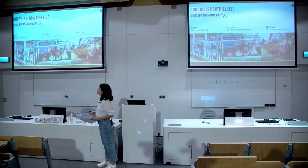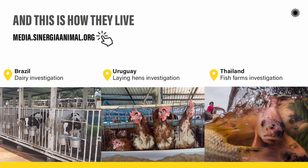This is how these animals live. Some of the worst practices for animals that have already been banned in Europe and in parts of the United States are still prevalent in Global South countries. For example, this is a dairy investigation Synergy Animal conducted in Brazil — cows confined in pens without isolation, without the possibility of socialization, separated from their mothers very early in their lives.